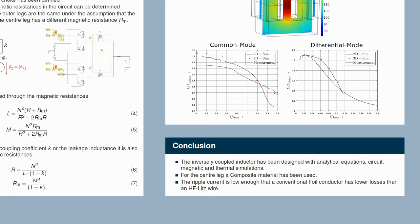For the center leg, a composite material has been used. We could reduce the coupled inductor in size because of this. And the skin and proximity losses were reduced since we have lower ripple currents due to the high coupling coefficient.